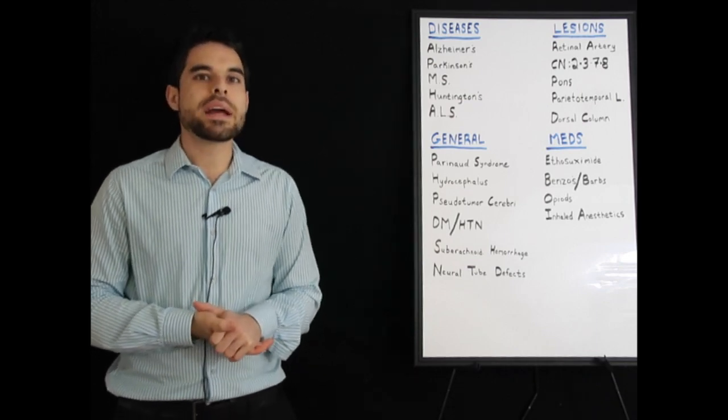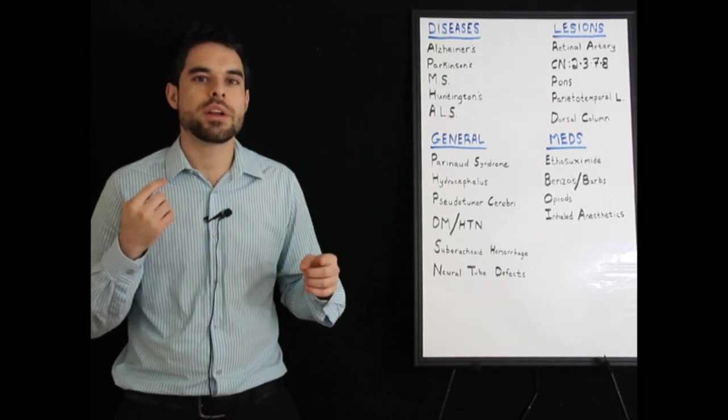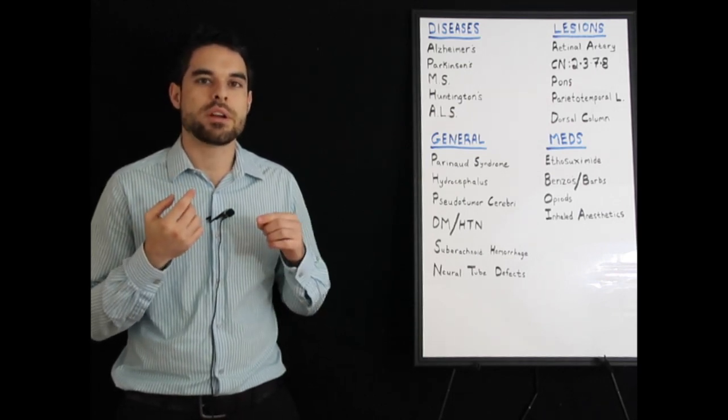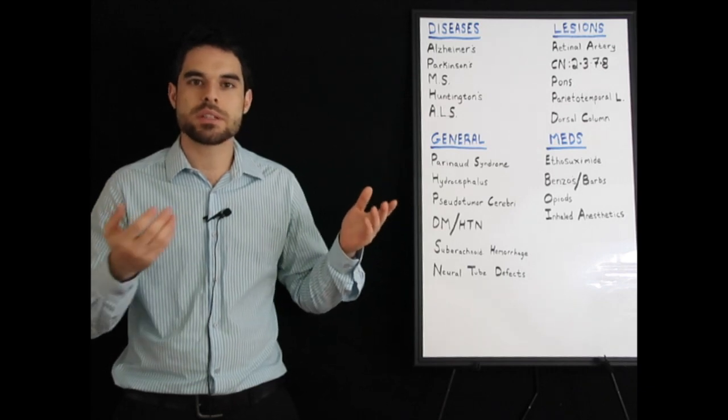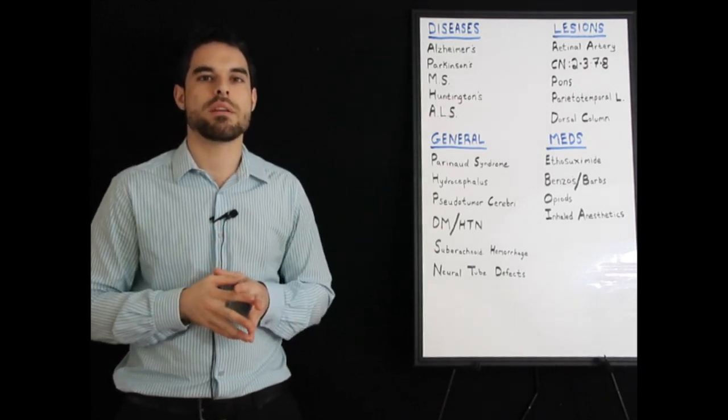Cranial nerve 2 and 3 lesions are high-yield in the fact that, particularly as you relate to the pupillary light reflex, cranial nerve 2 goes away, cranial nerve 3 goes towards, which to me is counterintuitive because 2 should stand for towards. But in this case, 2 is away, so it's the afferent.